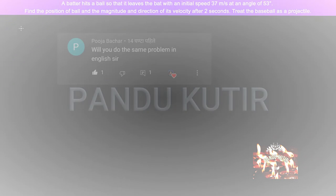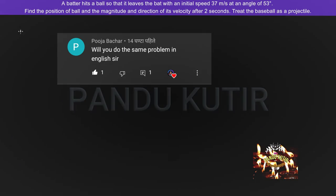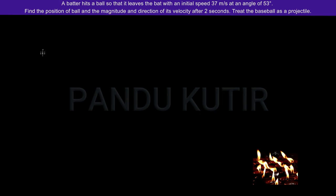This video is made upon request by one of our audience, Pooja. The problem says a batter hits a baseball such that it goes making an angle 53 degrees with horizontal and its velocity is 37 meters per second initially.